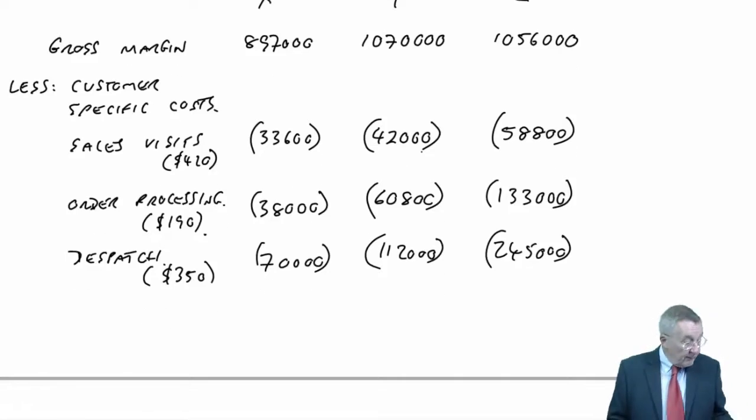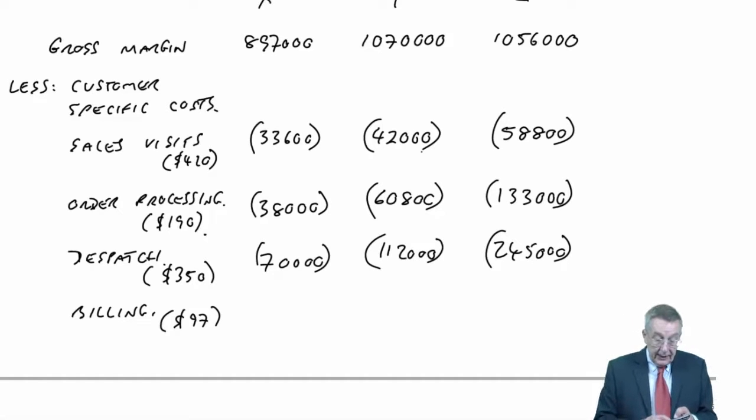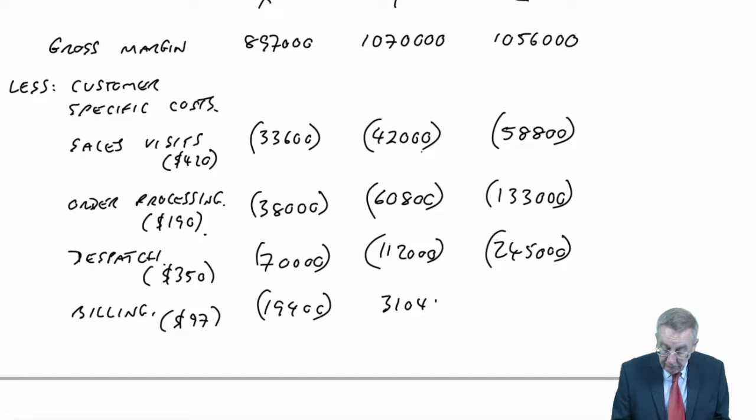Finally, our billing and collections. This time it's 97 per invoice. X has 200 invoices at 97, it's 19,400. To Y, we're sending 320 invoices. And finally to Z, 700 invoices, 67,900.